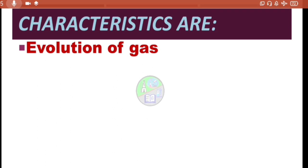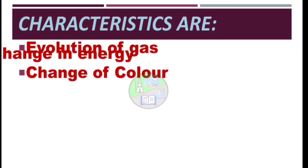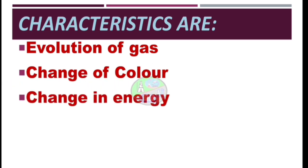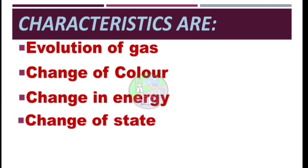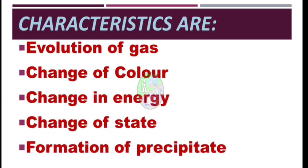The next characteristic is change of color. Third is change in energy. Next is change of state. And the last one is formation of precipitate. So let's see one by one how they are observed with examples.